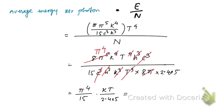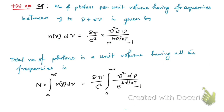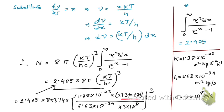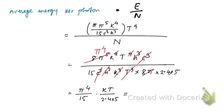Now putting in the values of π, Boltzmann's constant, and temperature — the temperature was 227°C, which converts to 227 + 273 = 500 K. Substituting all those values, we get approximately 3.79 × 10⁻²⁰ joules for the average energy per photon.